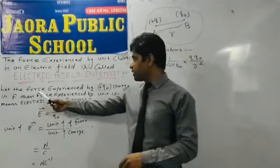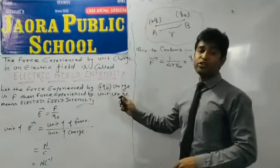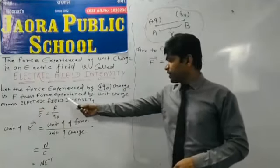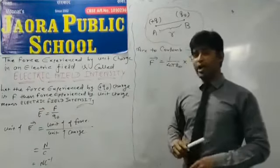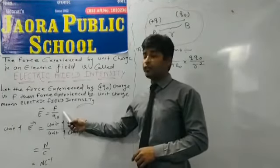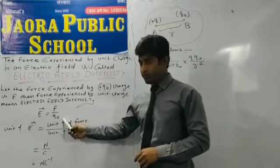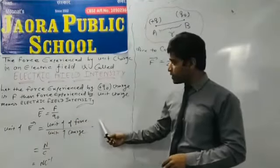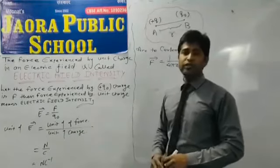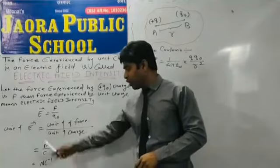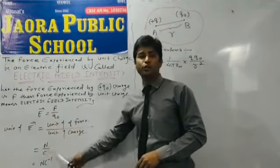Then, the force experienced by charge q naught is capital F. Then, the force experienced by unit charge means electric field intensity is equal to F upon q naught. Then, unit of electric field intensity is equal to unit of force upon unit of charge. Unit of force is newton and unit of charge is coulomb. So, the unit of electric intensity is newton per coulomb.